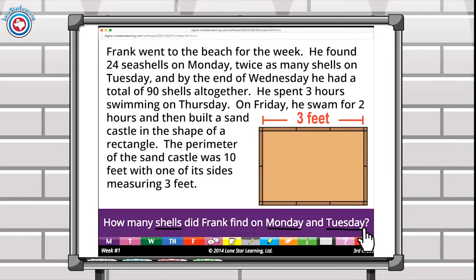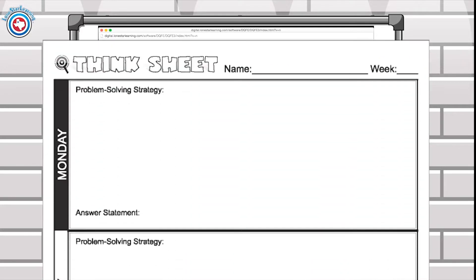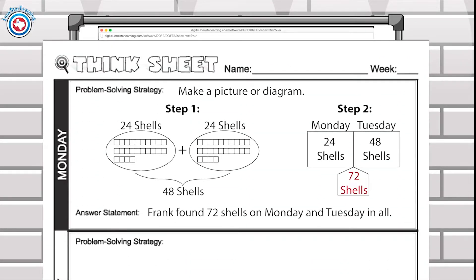Students choose a strategy and record it on their student think sheet and work the problem in the allotted space. After they find a solution, the students will write a summary sentence on their think sheet.